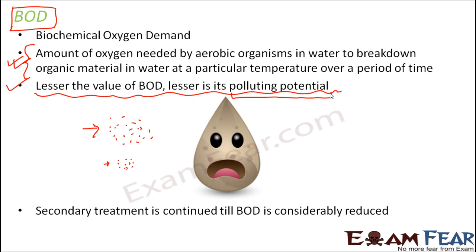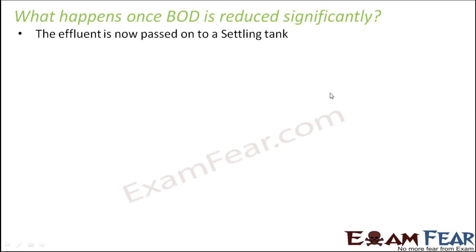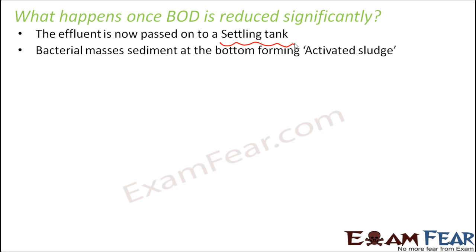The concept of BOD is very important because it decides for how long the secondary treatment needs to be continued. Once the BOD has reduced significantly, the effluent — the clear water which has got rid of organic impurities — is now passed on to a settling tank. Till now it was in the aeration tank where air was being pumped in; now it is passed on to a settling tank where it is just allowed to remain undisturbed for some time. It is called a settling tank because you allow it to settle down on its own. After some time, you observe that the bacterial masses, the aerobic microbes, start settling down at the bottom.